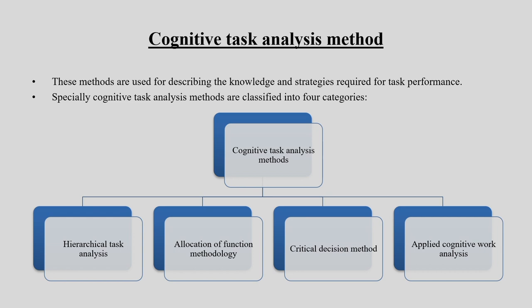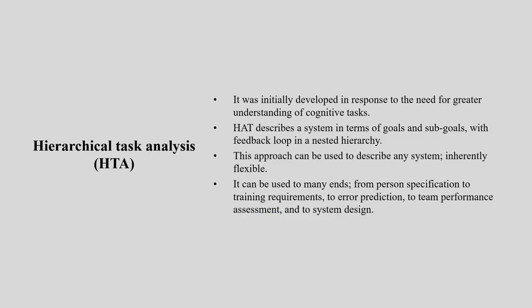Let us go for the cognitive task analysis method. These methods are used for describing the knowledge and strategies required for task performance. Cognitive task analysis methods are classified into four major categories: hierarchical task analysis, allocation of function method, critical decision method, and applied cognitive work analysis. Hierarchical task analysis was initially developed to meet the need for greater understanding of cognitive tasks and is now a very common tool used in many other fields.